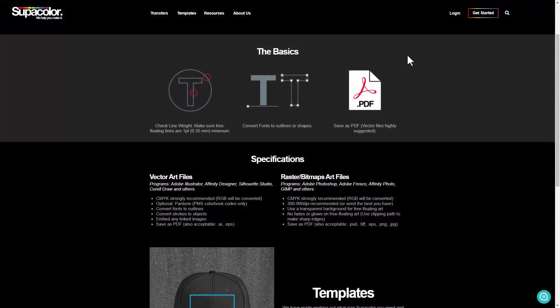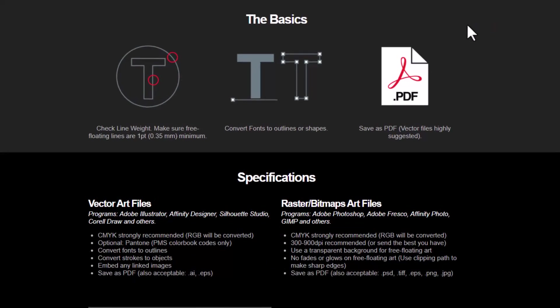Let's look at the guidelines for vector artwork on the Supacolor website. They ask us to check the line weight — free floating lines should be a minimum of one point. They recommend a PDF file for vector. Under vector artwork they suggest CMYK, noting that RGB will be converted to CMYK. It's also okay to use Pantone colors with PMS color codes. Convert fonts to outlines and convert strokes to objects.